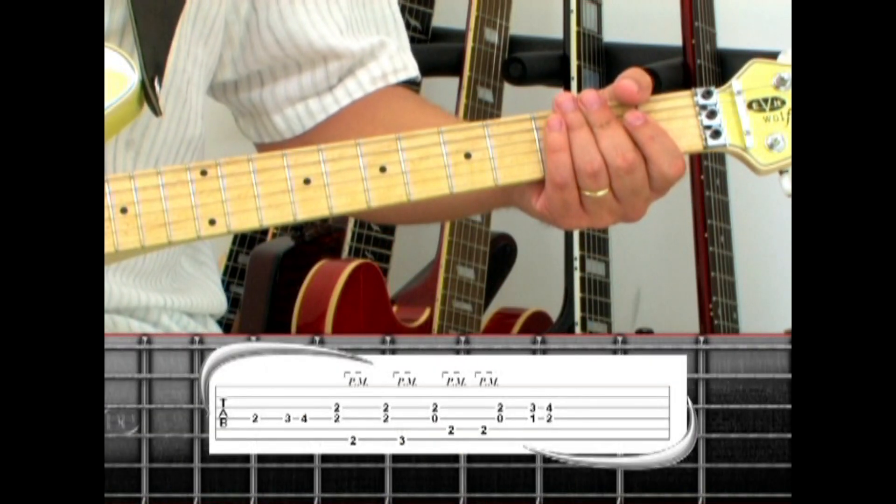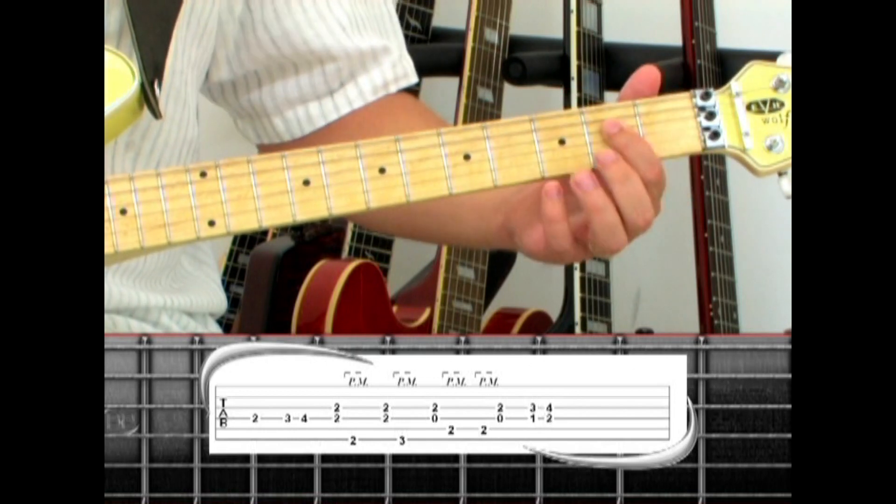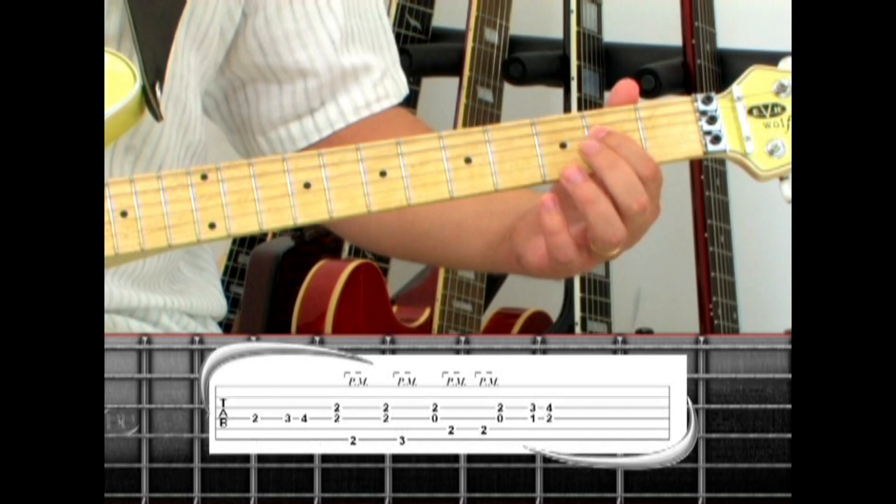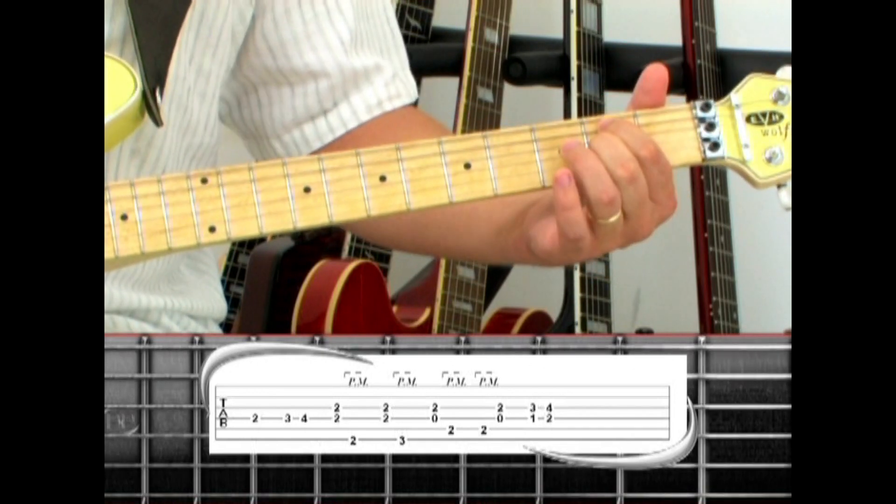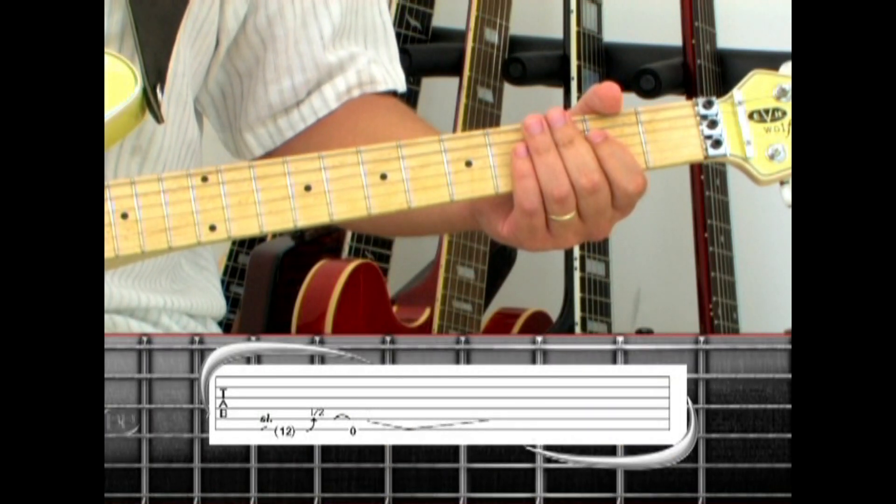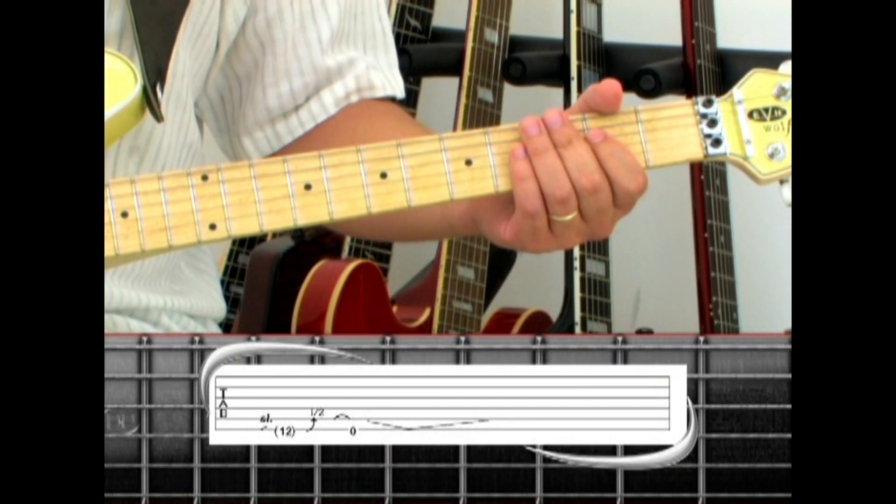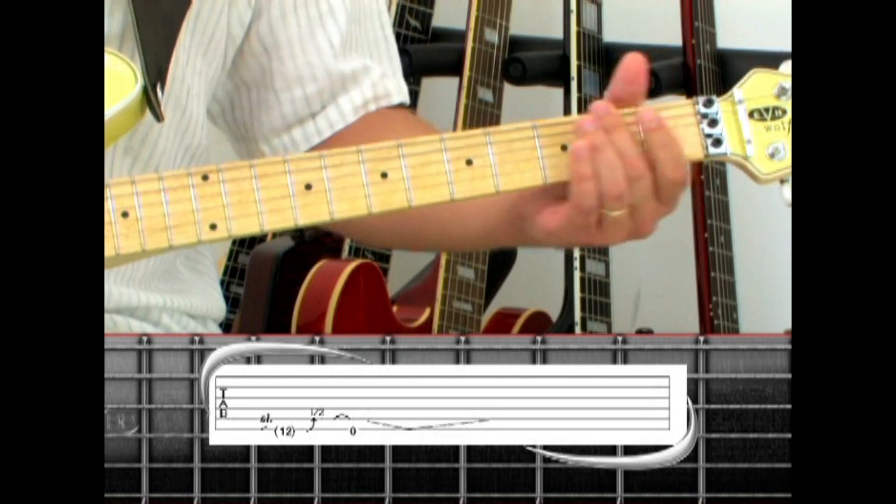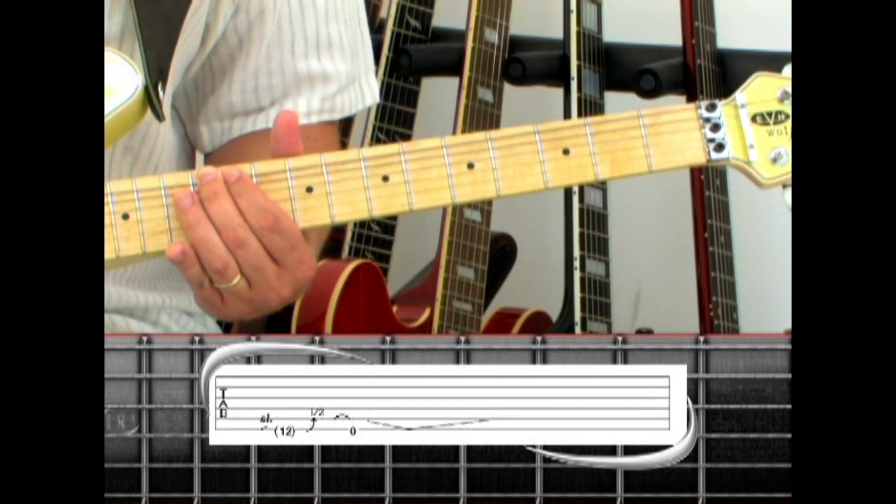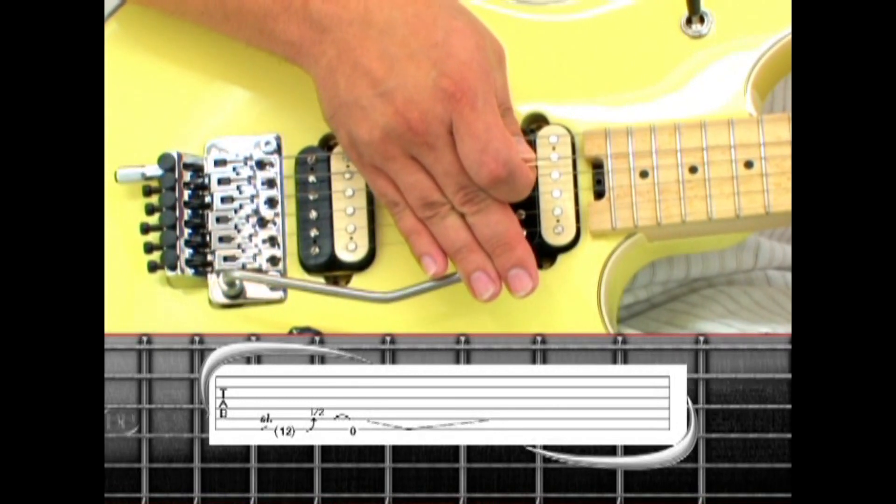After the guitar solo, the main riff is played, but sometimes it starts on the 4th string 2nd fret instead of the open note. As the main riff is repeated, fills are added, like this slide up the 6th string to the 12th fret, give it a slight bend, and pull off to open, then dive with the tremolo arm and slowly return.